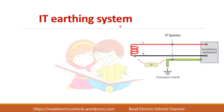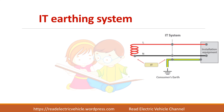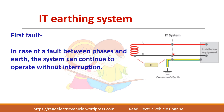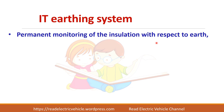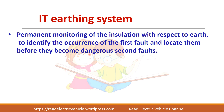In the IT earthing system, the first letter I means the live parts are isolated from earth — there is no connection to earth on the source side. The second letter T means the equipment is connected to earth. An important feature of the IT system is the first fault: when a fault occurs between the phase and earth, the system will continue to work without any interruption. However, this fault must be cleared immediately before a major second fault occurs. Permanent monitoring of insulation should be done so that any first fault is identified and cleared immediately.